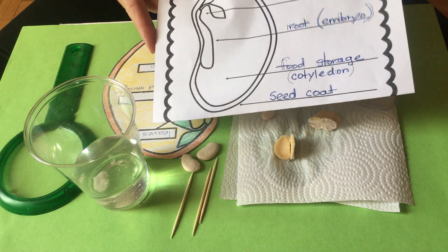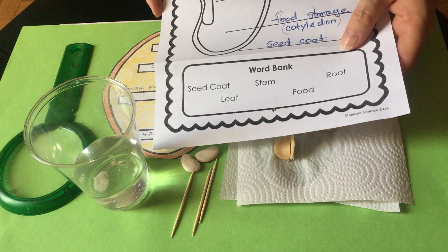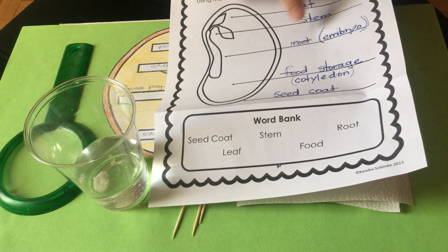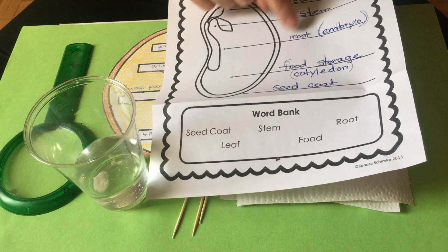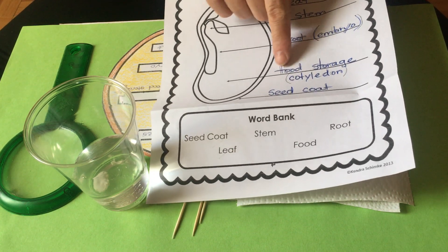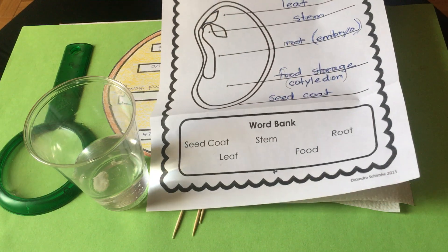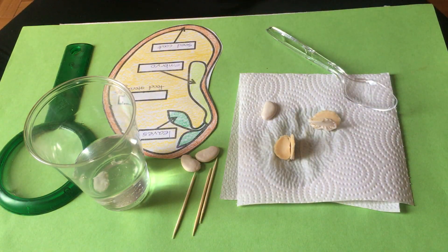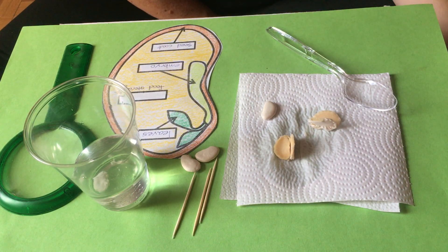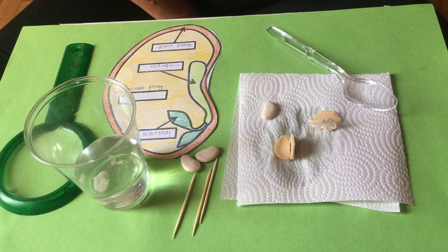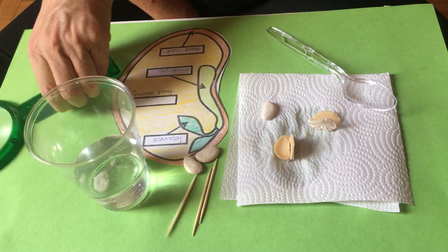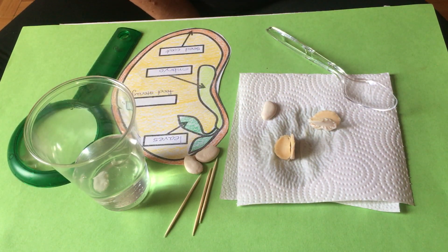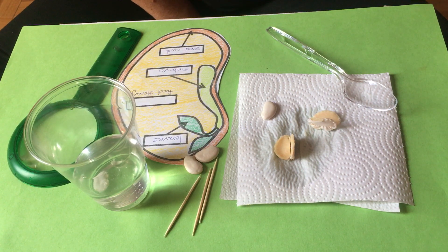We have the leaf, the stem - I usually put the stem and the root together as the embryo - food storage, and the seed coat. These are the four major parts. I hope you enjoy the experiment. It's cool to use your magnifying glass and to look at them and see them up close. Thanks for joining me for this experiment, and don't forget to finish your lab sheet.